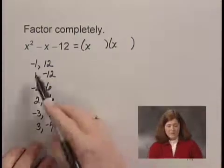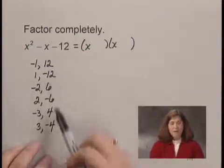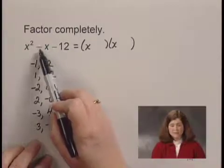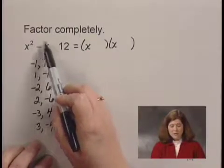Now we look at the sum of those factors. We want the pair of factors whose sum is negative 1, since negative 1 is the coefficient of the middle term.